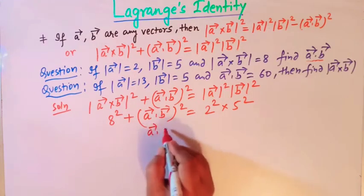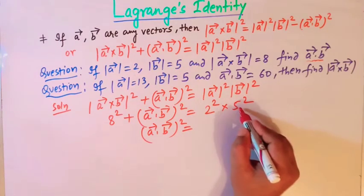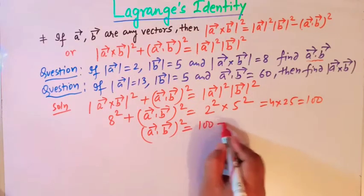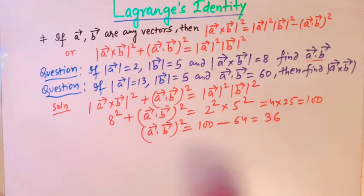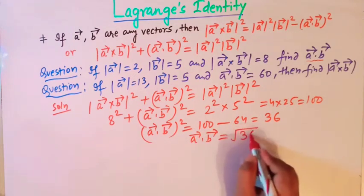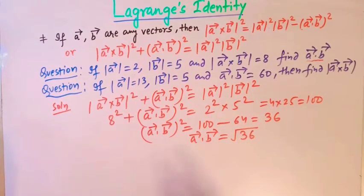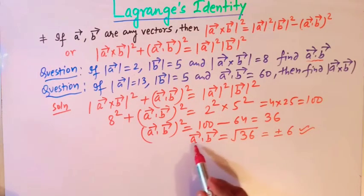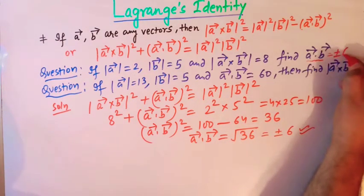So (A·B)² equals 4 times 25, which is 100. Taking 8² = 64 to the other side, we have (A·B)² = 100 − 64 = 36. Therefore A·B equals the square root of 36, which is plus or minus 6. So the required value of A·B is ±6.